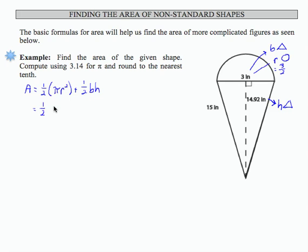So this is going to be 1 half times pi times the radius of the circle, which we found out was 3 halves squared, plus 1 half times the base, which is 3, the base of the triangle, times the height of the triangle, which is 14.92.